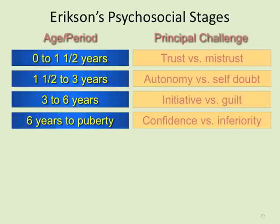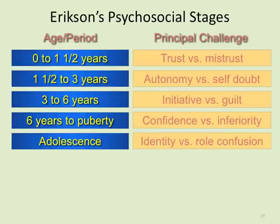From six years to puberty, it's competence versus inferiority. This is when we start having a huge social influence. We're dealing with how we feel internally and how that compares to the external world — self-confidence and whether we feel worthy or not.